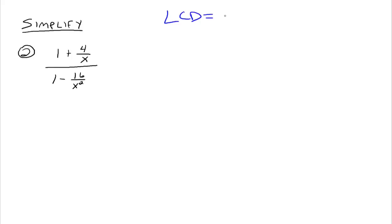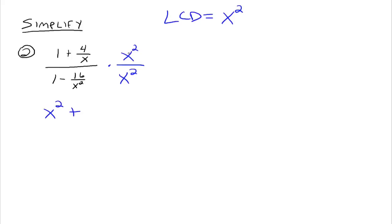What's the least common denominator of all the little fractions? Well, here you have x and x squared as denominators of the smaller fractions, so the LCD would just be x squared. Now we're going to take x squared and multiply it to the top and the bottom of the bigger fraction — that's our fancy version of 1. Using the distributive property: x squared times 1 gives x squared, plus x squared times 4 over x, which gives 4x squared over x, simplifying down to 4x.